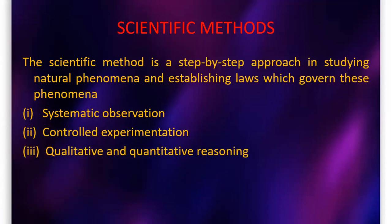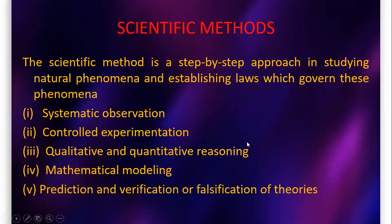The third feature is qualitative and quantitative reasoning — asking questions like Why? How? How much? — and finding answers. The fourth is mathematical modeling — suggesting some model by doing calculations. The fifth is prediction and verification or falsification of theories — predicting results, verifying them, and checking whether they are correct. If a theory is experimentally proved, it is accepted; if not, it is considered false.